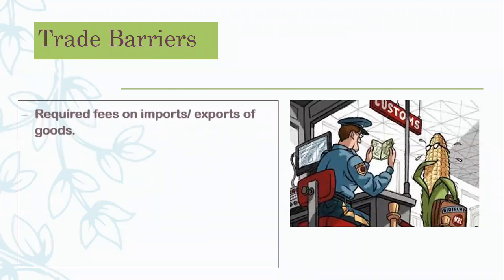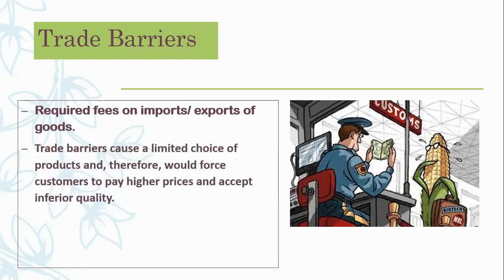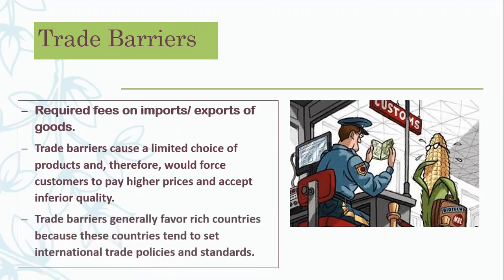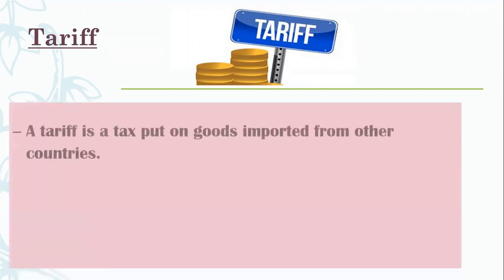Under protectionism, we have trade barriers. Trade barriers require fees on the import or export of goods. They result in limited choice of products and force customers to pay higher prices and accept inferior quality. Trade barriers generally favor rich countries because these countries tend to set international trade policies and standards.